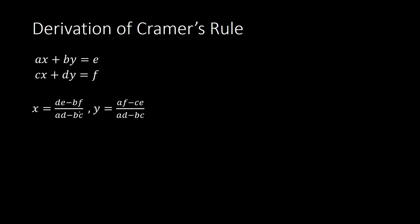So in conclusion, we have X and Y equaling the following fractions. Now if you look at the denominator, AD minus BC, and you look at the two equations — if you take the coefficients of the variables, so A and B, then C and D, and you take the determinant of the matrix ABCD — when you multiply across you have A times D, and then C times B or BC, so you get AD minus BC. That is your denominator for both fractions. So your denominator is found by taking the determinant of the matrix of coefficients of the variables.